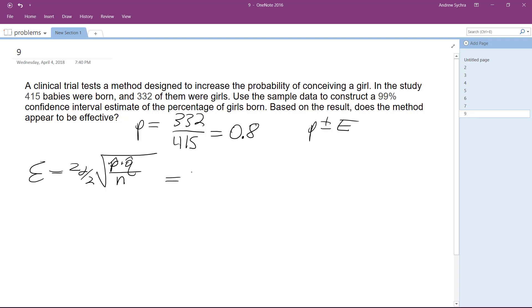Oh, it's 99%, so it's 2.576 times the square root of P, which is 0.8, and then Q is 1 minus P, which is 0.2, all over N, which equals 415.